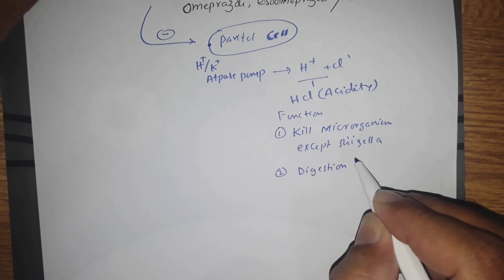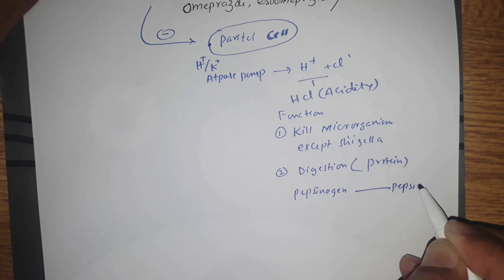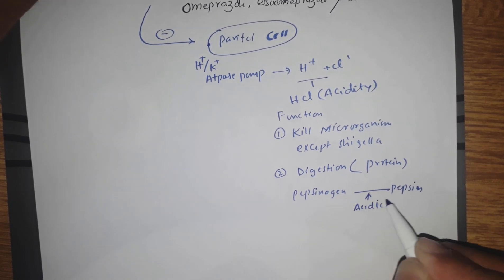Acidity also helps in digestion, more specifically of protein, because pepsinogen converts into pepsin in the acidic environment. Then this pepsin helps in protein digestion.